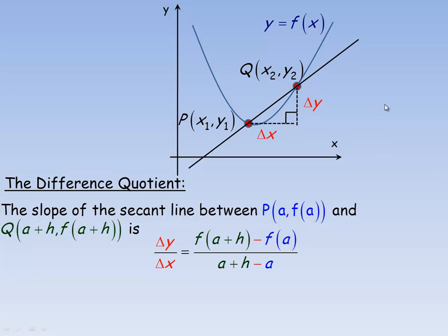We're going to use that idea in the example a little later on in the lesson. On the second page, same diagram here — the difference quotient is its rate of change formula. The slope of the secant line between the point at a, f of a, and Q at a plus h, f of a plus h — I'll get into this form in a minute.